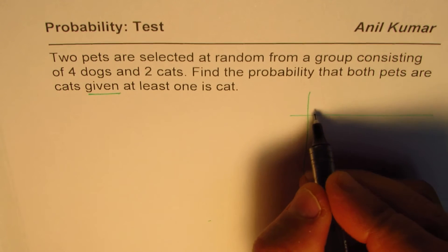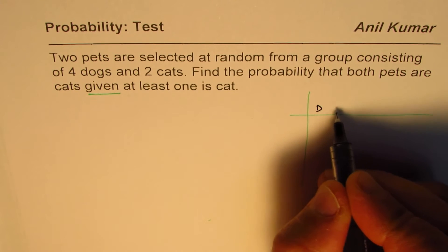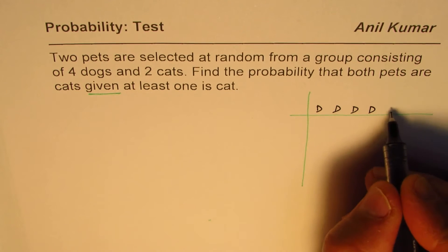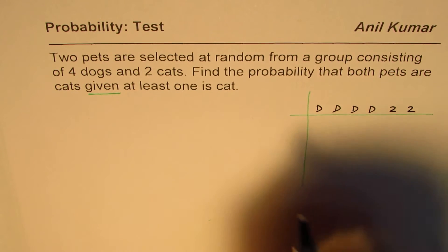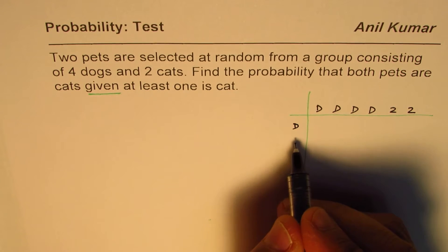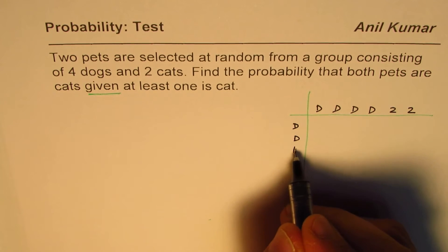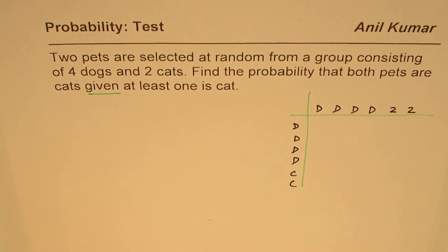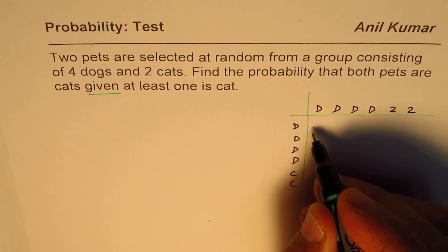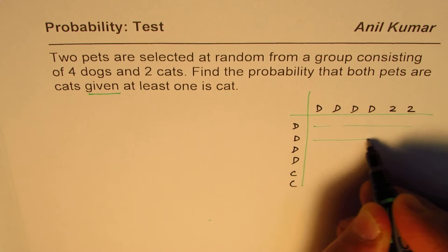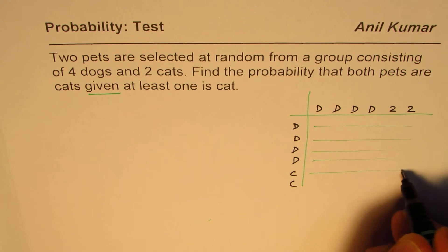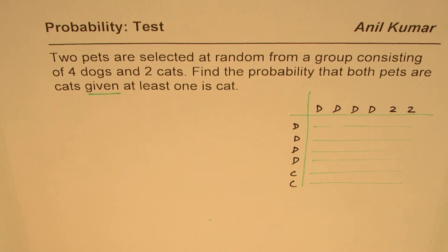We'll say let D be dogs and C be cats. So I'll write the four dogs — these four represent the four dogs — and then we have two cats. Similarly on the other side, the next selection from we have four dogs and two cats. The combinations of picking up these dogs and cats could be filled in here.